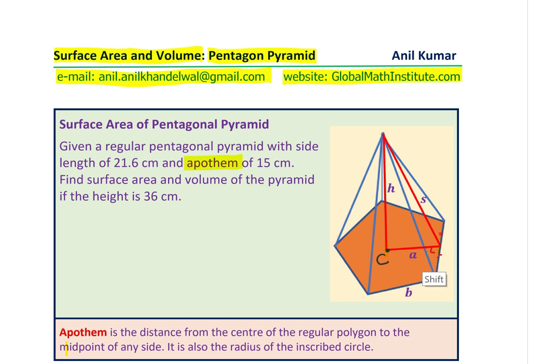And it will also be perpendicular. So that is Apothem which is also defined here as Apothem is the distance from the center of the regular polygon to the midpoint of any side. It is also the radius of the inscribed circle. So sometimes when you have to find the radius of the inscribed circle, you use Apothem.